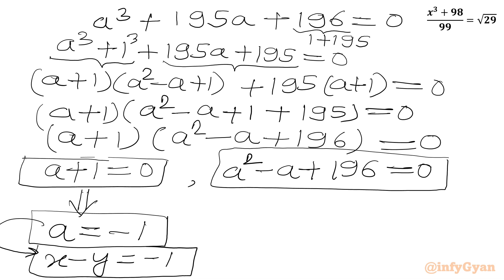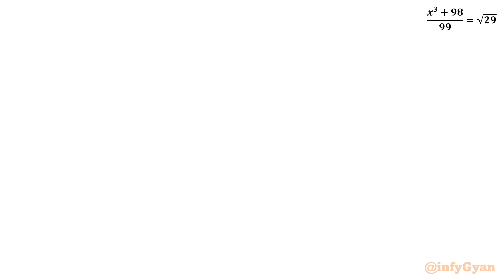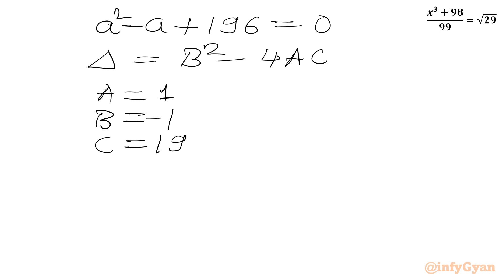Now I will solve this quadratic equation. Let me write here a squared minus a plus 196 equals 0. I will check only the discriminant value. As per formula, b squared minus 4ac. Here a is the coefficient of a squared, small a squared, 1. b will be negative 1, c is 196.